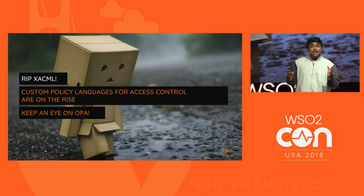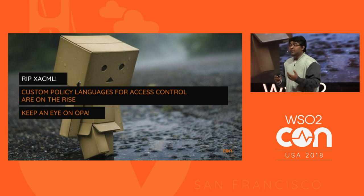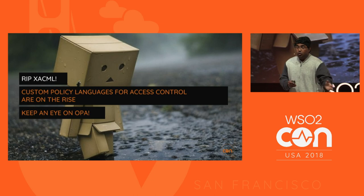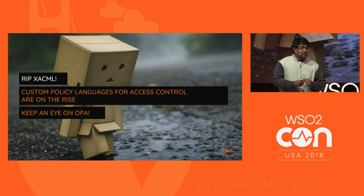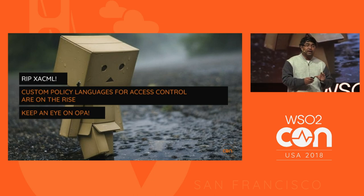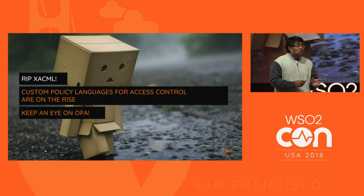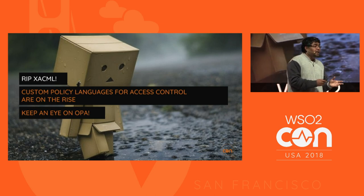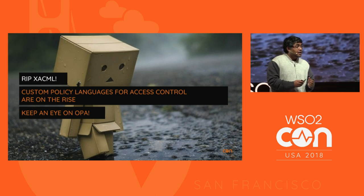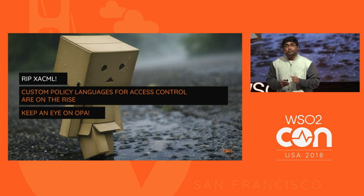AWS has its own policy language based on JSON. Open Policy Agent (OPA) is one of the policy languages for fine-grained access control on the rise, mostly popular in the microservices domain. Netflix today uses OPA.